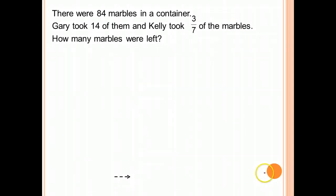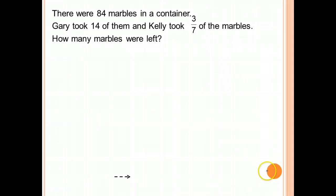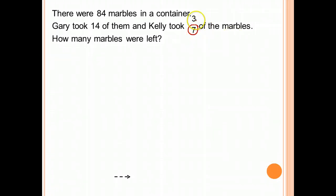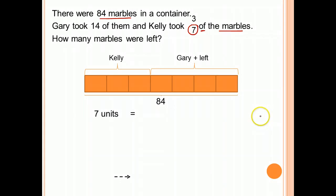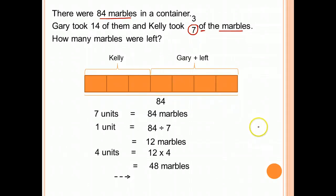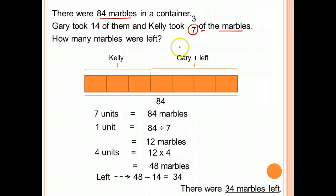Let's look at this question and see how similar or different it is from the previous one. There were 84 marbles in a container. Gary took 14 and Kelly took 3/7 of the marbles. How many marbles were left? Here, 3/7 of the marbles means the whole is 7 units and 84 marbles. Kelly took 3 units out of 7 units. 7 units is 84, so 1 unit is 12. 4 units is 12 times 4, which is 48. To find what's left, take 48 minus Gary's 14, giving 34 marbles.